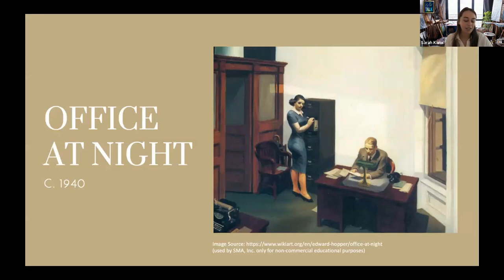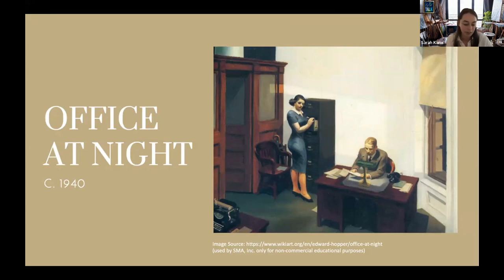Office at Night depicts a woman and a man alone in the office. Hopper elevates what might be a simple scene of everyday life with an extremely raised angle of perspective. The psychological tension between the figures depicted in the room is achieved through the compression of the space, which limits their ability to move about. Several years after the Walker Art Center in Minneapolis purchased this painting, Hopper wrote them the following explanation: